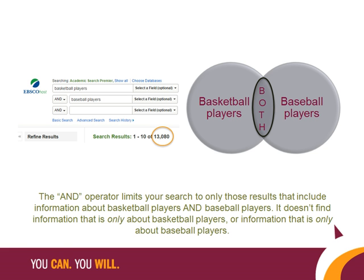The advanced search feature in databases like EBSCOhost allows you to connect two search terms with a Boolean operator like AND. I've entered basketball players in the first line of the search string, and the Boolean operator AND along with the term baseball players for the second search term. The AND operator limits your search to only return results about both search terms. The circle diagram represents all of the possible results about basketball players and all of the possible results about baseball players. In this search, we've limited our results to the darker shaded area in the center where information about basketball players and baseball players intersects.